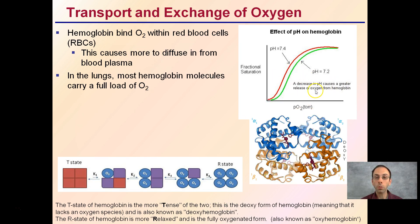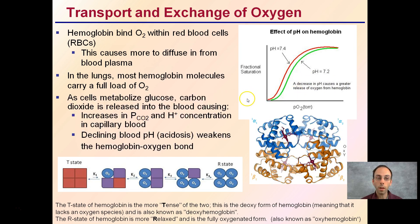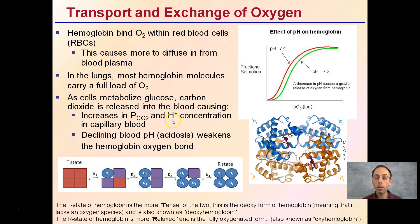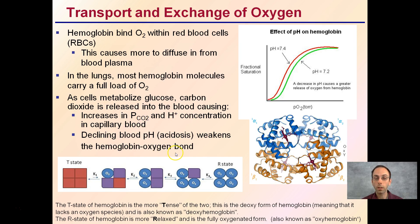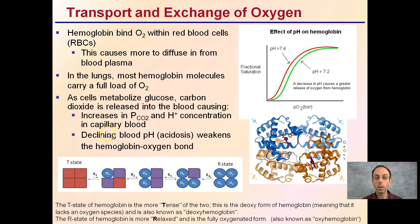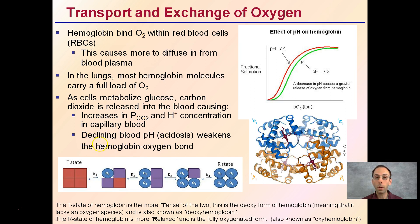A decrease in pH causes greater release of oxygen from hemoglobin. As cells metabolize glucose, carbon dioxide is released into the blood, causing two main things: an increase in carbon dioxide pressure and hydrogen ion concentration in capillary blood. pH is the measure of hydrogen ions, so increasing hydrogen ion concentration essentially decreases pH, causing acidosis. This acidic environment can weaken the hemoglobin-to-oxygen bonds. It's important that we don't let our blood get too acidic, because that can completely break apart our ability to bind oxygen.